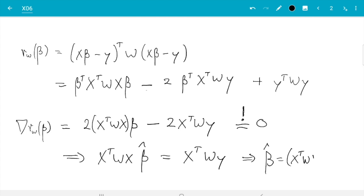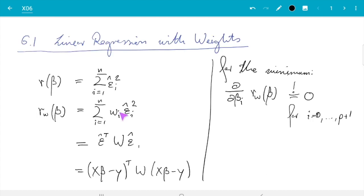So we should get the same result. In this case, W is the identity matrix.